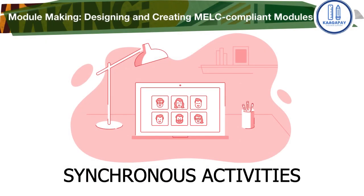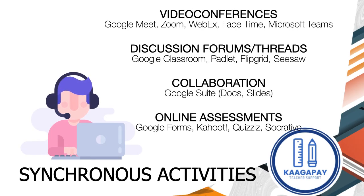For synchronous activities — these are the activities that are done with the group. Examples are video conferences, discussion forums and threads, collaboration, and online assessments. For video conferences, you can use Google Meet, Zoom, WebEx, FaceTime, Microsoft Teams, and many others. For discussion forums and threads: Google Classroom, Padlet, Flipgrid, CISO. For collaboration: Google Sites, Google Suites. And for online assessments: Google Forms, Kahoot, Quizzes, and Socrative. These are the activities you can do together as a class or in group work during class time.